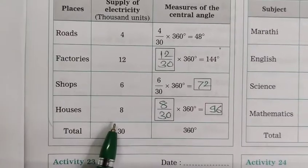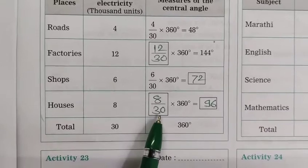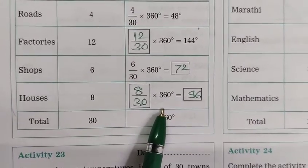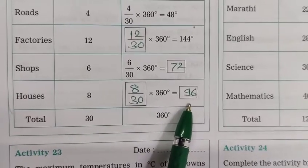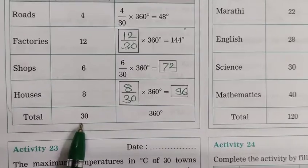Now houses, supply of electricity 8. Measures of the central angle equal to 8 by 30 into 360 equal to 96. So the total is 30 and 360. This is Activity number 21.